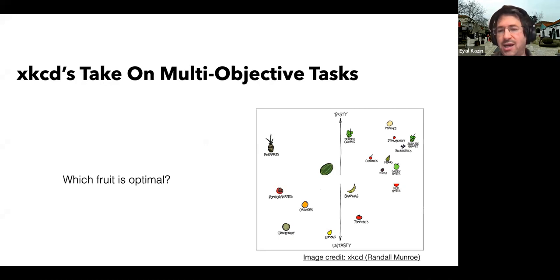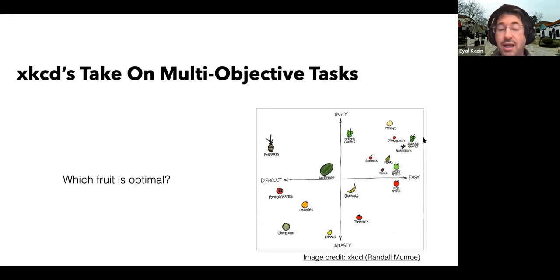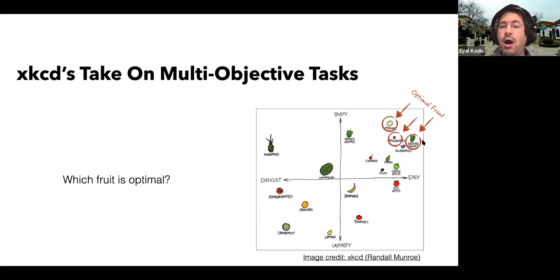In this XKCD comic, he subjectively distributes fruit according to his preference both in taste — where he finds peaches the most tasty — and according to how easy it is to eat, where he ranks seedless grapes as most optimal. My question for the audience: which is the optimal fruit you as his officemate would bring to the kitchen if you want to optimize for both taste and how easy it is to eat? You might have said peaches, you might have said seedless grapes, some of you might have said strawberries. The answer is that it was actually a trick question — there's no one optimal fruit.